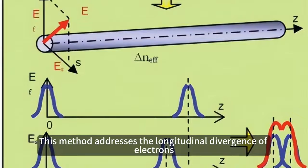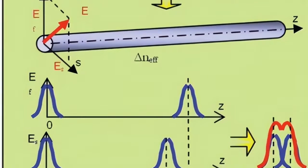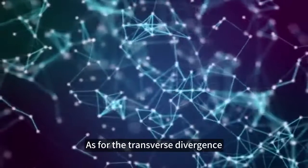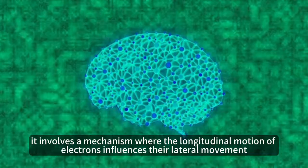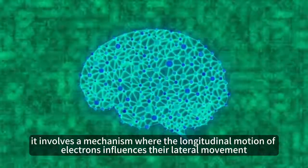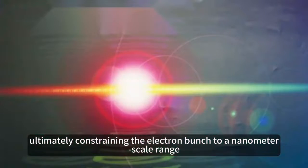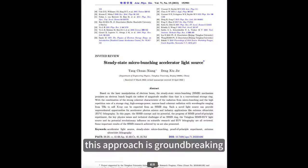This method addresses the longitudinal divergence of electrons. As for the transverse divergence, it involves a mechanism where the longitudinal motion of electrons influences their lateral movement, ultimately constraining the electron bunch to a nanometer scale range. In summary, this approach is groundbreaking, thinking beyond traditional frameworks.